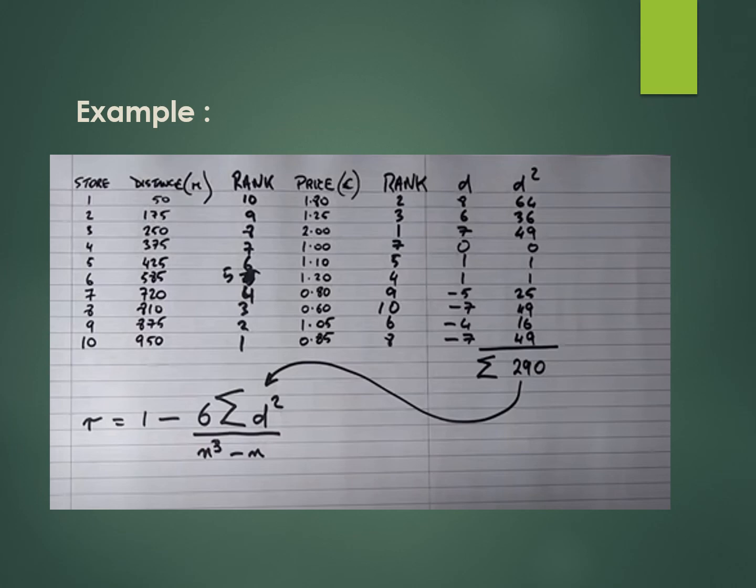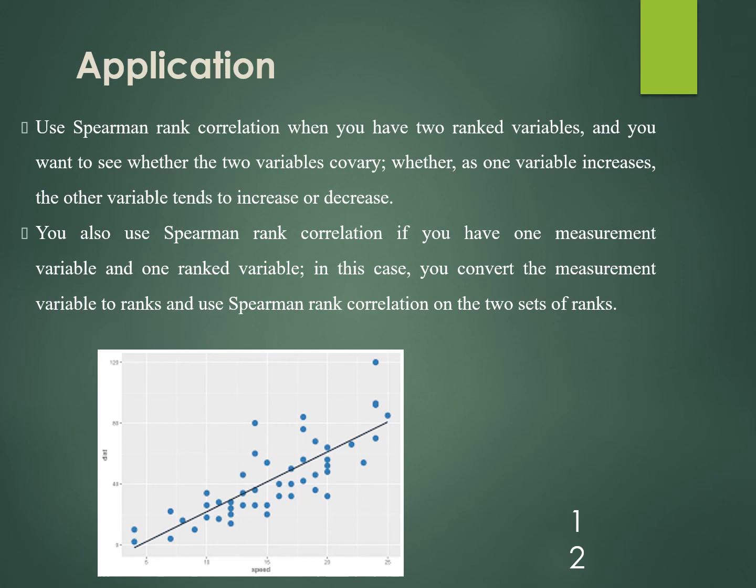Application: we use Spearman rank correlation whenever we have two ranked variables and want to see whether they co-vary — such that when one variable increases, the other variable tends to increase or decrease with it.